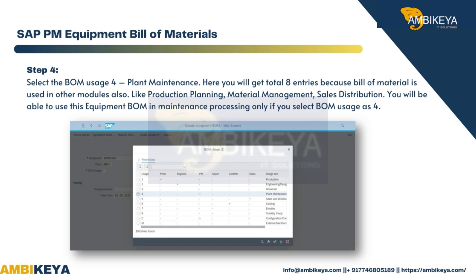Step 4 — Select the BOM usage for plant maintenance. You will get a total of 8 entries because the bill of material is used in other modules as well, such as production planning, material management, and sales distribution. You will be able to use this equipment BOM in maintenance processing only if you select BOM usage as 4.